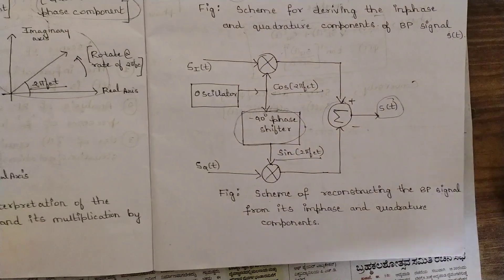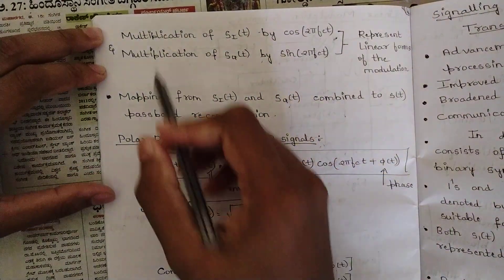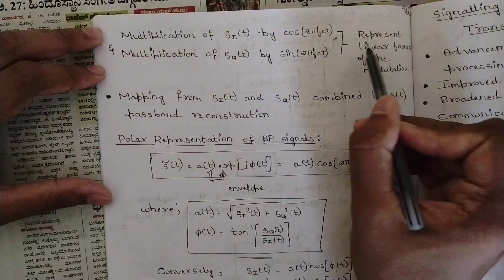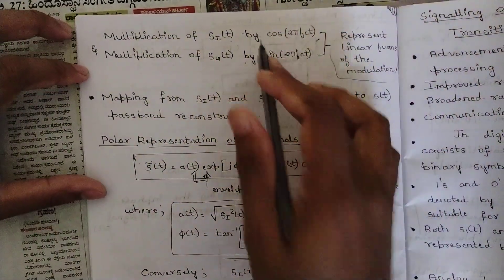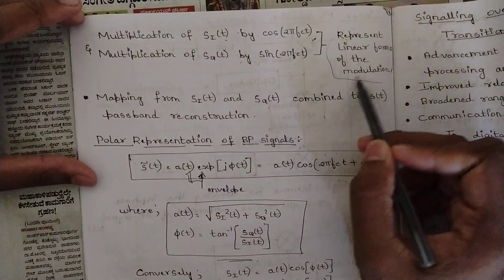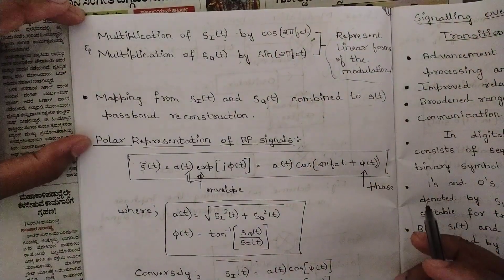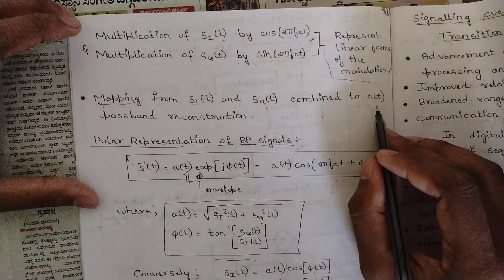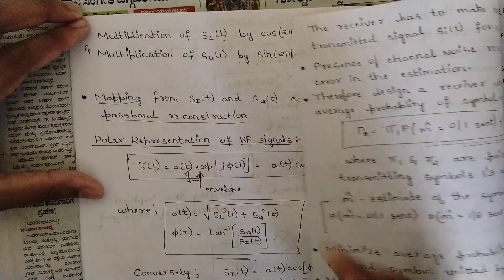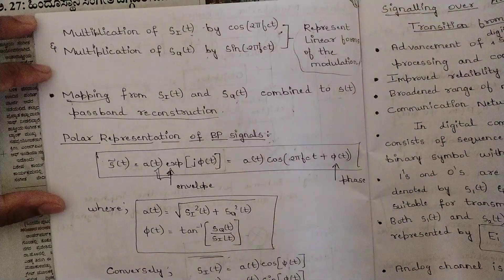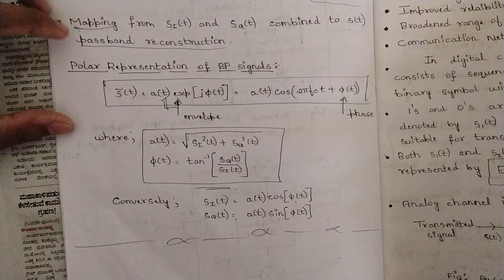Please pause the video and refer to these block diagrams. Key points: multiplication of s_i(t) by cos(2π f_c t) and multiplication of s_q(t) by sin(2π f_c t) represent the linear forms of modulation — this is called a linear modulation technique. Also, the mapping from s_i(t) and s_q(t) combined back to the band pass signal s(t) is called pass band reconstruction.